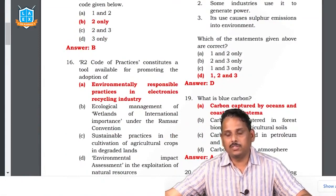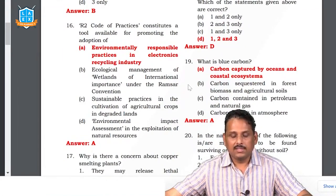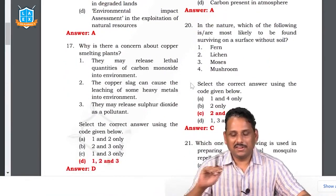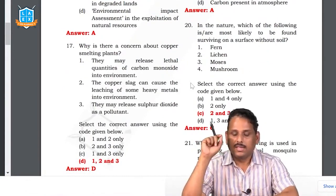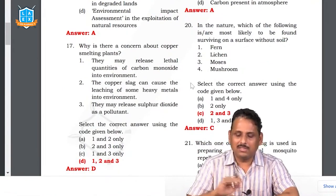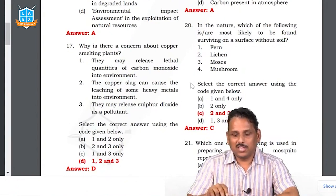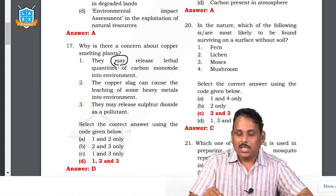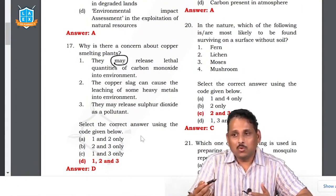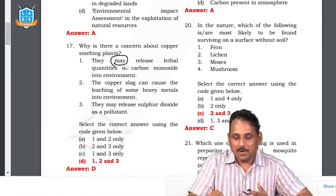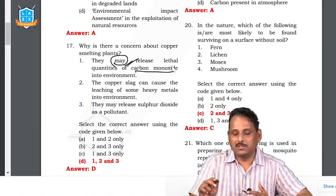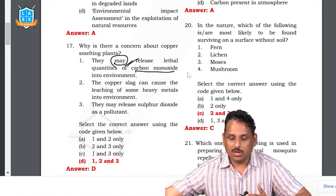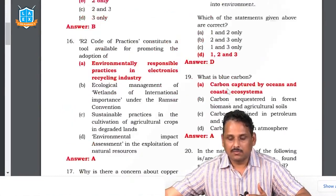Question 16: R2 code of practices are related to electronics recycling; the answer is A. Question 17: copper smelting — there is debate about whether they release lethal quantities. Every smelting releases carbon monoxide. The statement says 'they may release lethal quantities' — the word is 'may release,' not 'will release lethal quantities,' and there is no classification of what quantity is called lethal. That is why we included point one in the answer. Question 18: with reference to furnace oil — it is a product of oil refineries, some industries use it to generate power, and it causes sulfur emissions, which is why it is being discouraged. The answer is D.